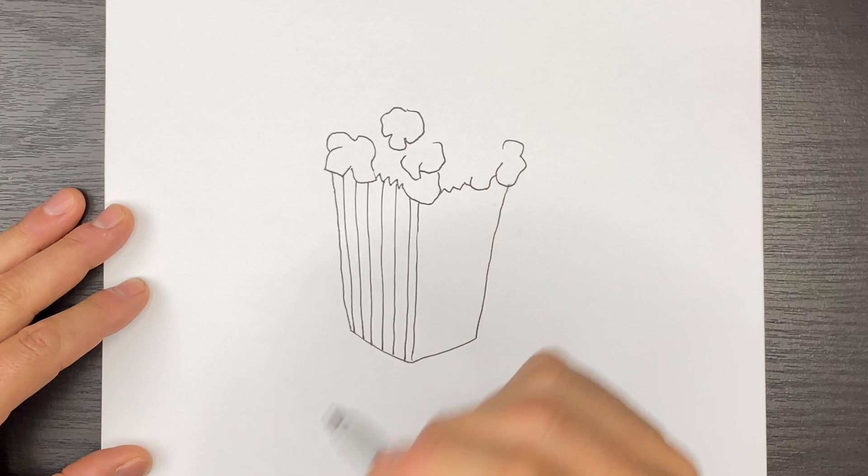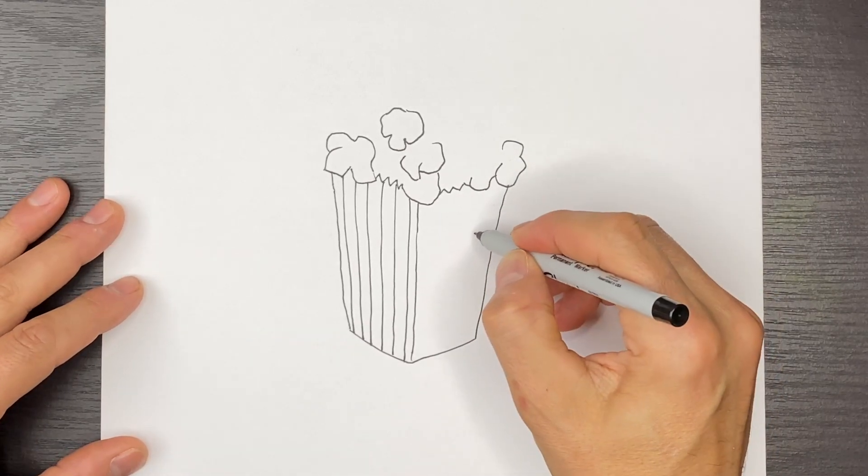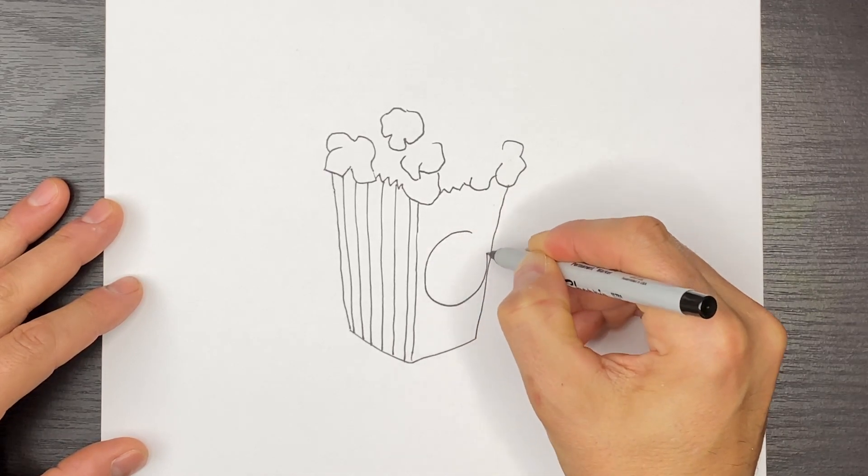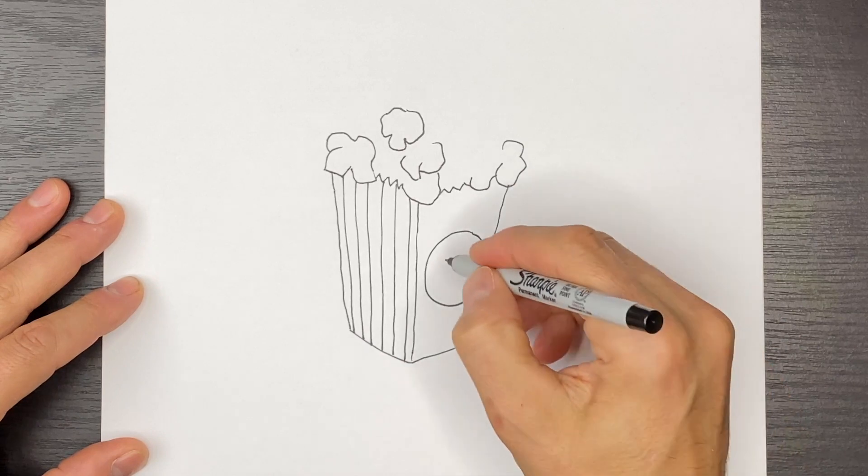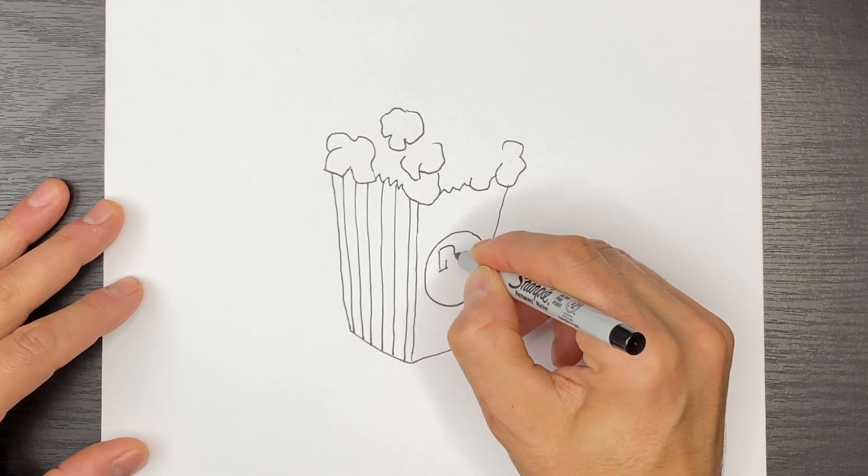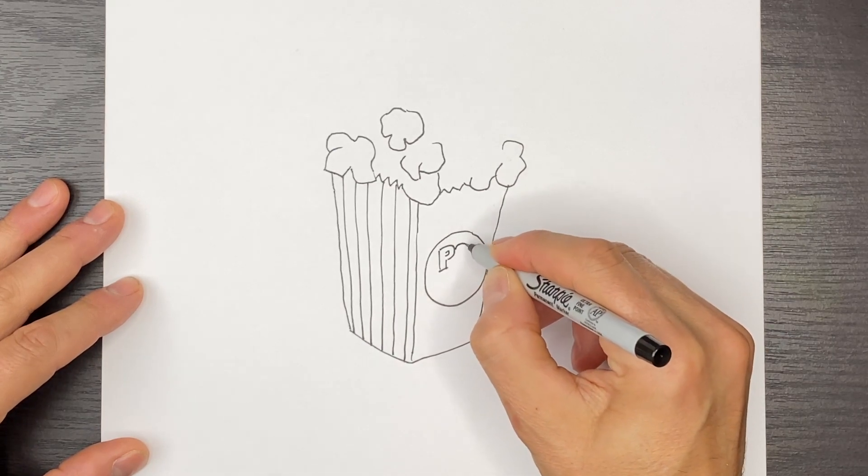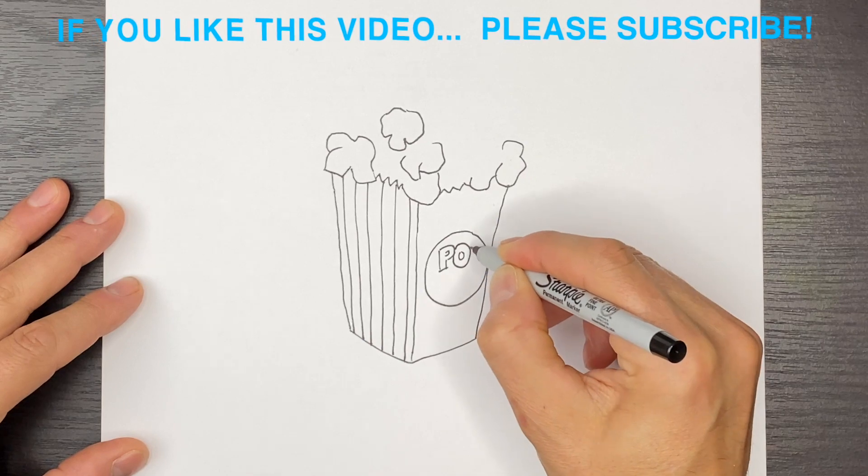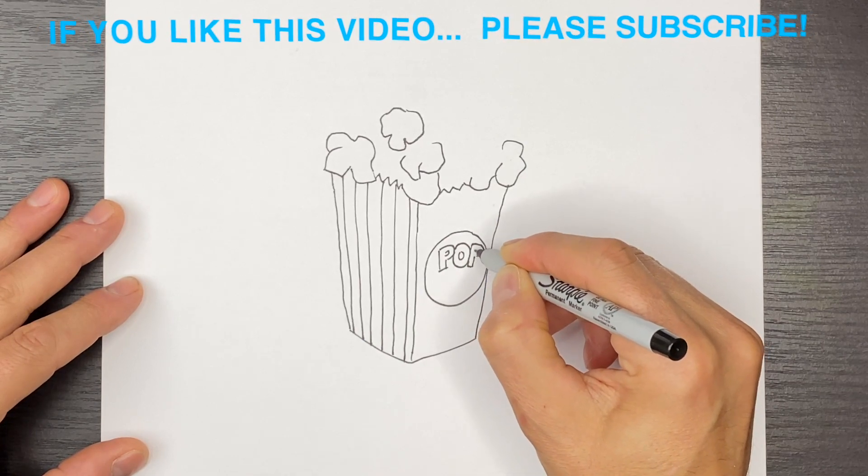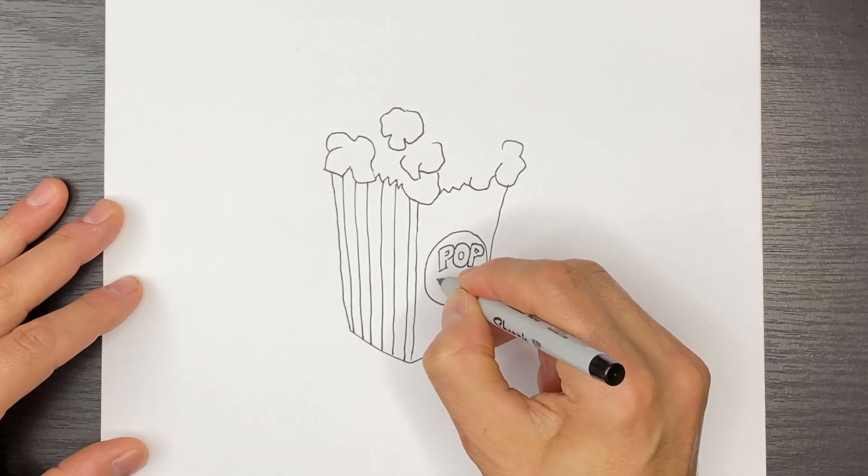Now on this side, I'm going to have a circular shape with popcorn drawn in. So I'm going to do a round shape like this. Okay, and then over here, it's going to be a P, and then there's going to be an O, and then another P.